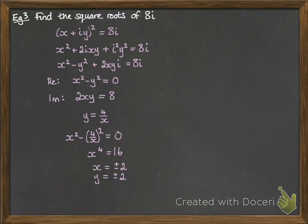Now when x is 2, y is 2. And when x is minus 2, y is also minus 2. So we get that the square root of 8i can be 2 plus 2i or minus 2 minus 2i.